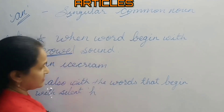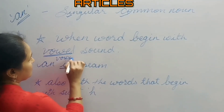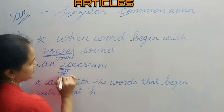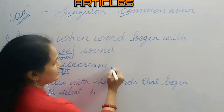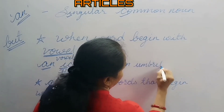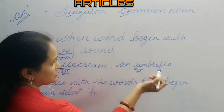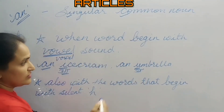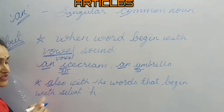For example, 'an ice cream' — here it starts with 'i', which is a vowel, and the pronunciation is also a vowel sound. So we use article 'an'. Another example: 'an umbrella' — the starting of the word is a vowel sound, so we use article 'an'.